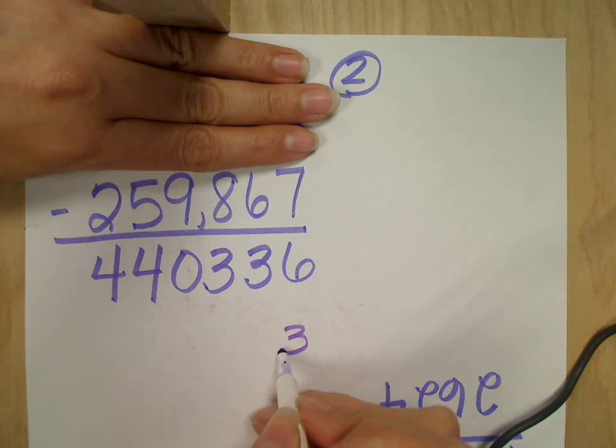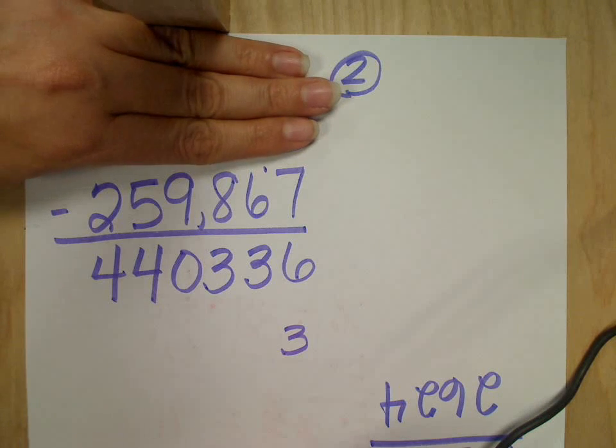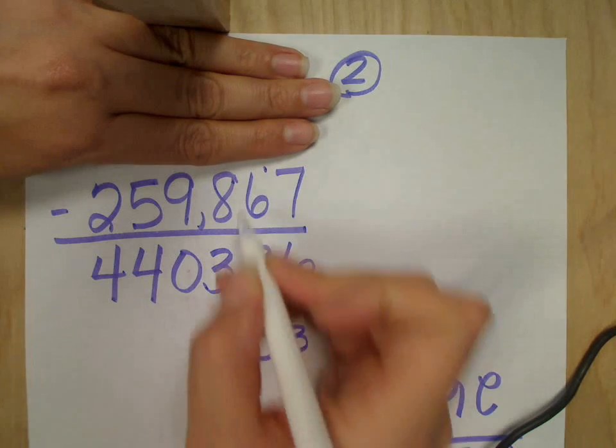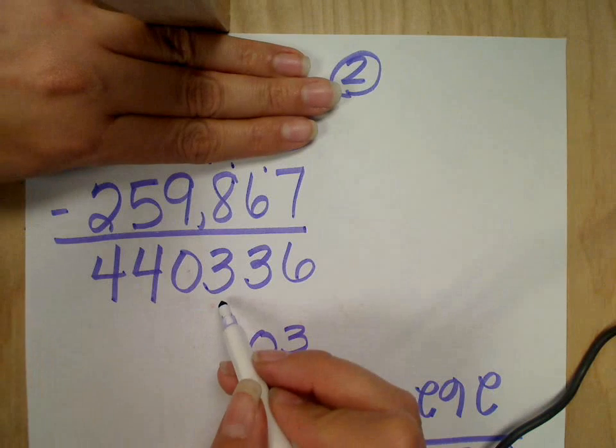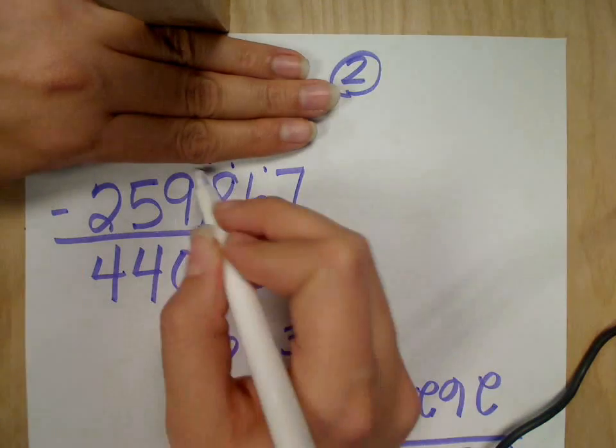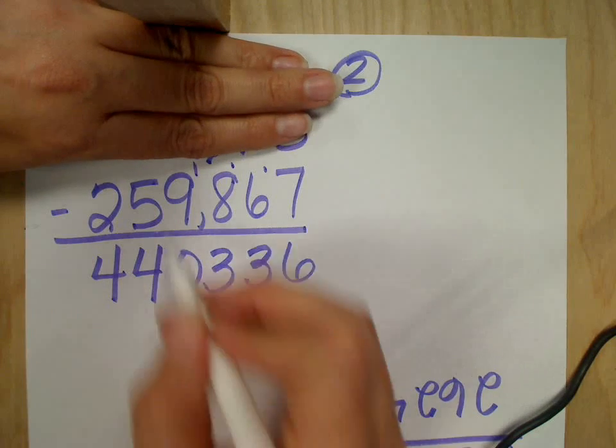13. Carry the one. Six and one is seven plus three? Ten. Eight and one is nine. Nine plus three? Twelve. Nine and one? Ten.